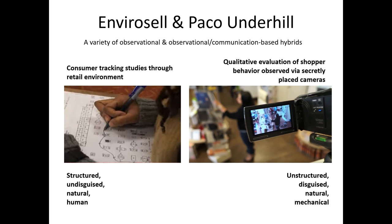Another example from EnviroCell is using qualitative evaluation of shopper behavior observed via secretly placed cameras. EnviroCell or some other company would place cameras throughout a retail store in secret locations where individuals are not aware that they're being recorded. Then, hours upon hours of videotape are recorded, watched, and documented by EnviroCell employees. In this case, EnviroCell may not be engaging in any structured observation — instead, they may be watching for surprising patterns or unexpected behaviors not specified in the research design. Therefore, it might be unstructured observational research. It's definitely occurring in a disguised space, people aren't aware they're being observed, it's still in a natural setting, but this time relying on mechanical observation to document the data.